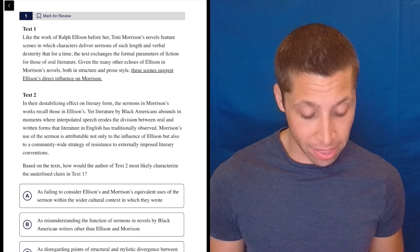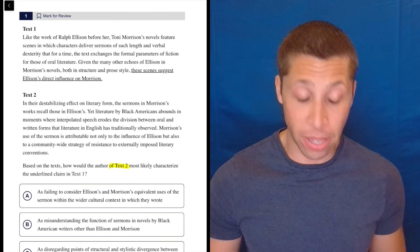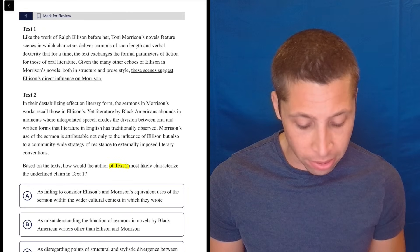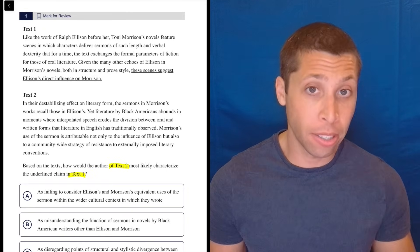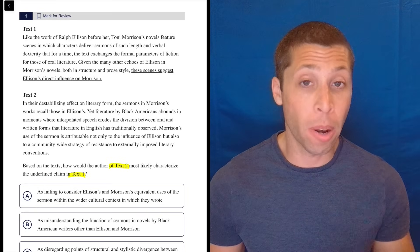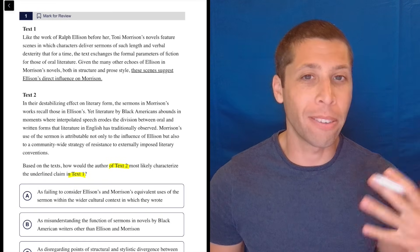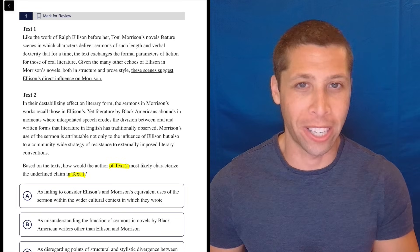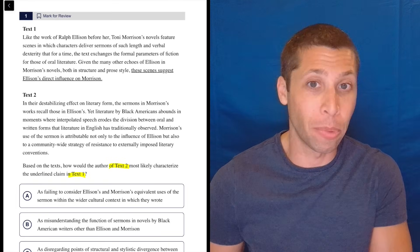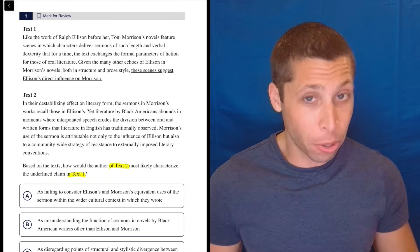Okay, so whenever they say that text two or they ask if text two, how it would respond to something about text one, I tend to read text two first. I know that I'm going to be missing some of the context, but I'm okay with that. I'd rather kind of get the idea that text two is trying to get across and then kind of have that in mind as I'm reading text one. So let's see if that works here.